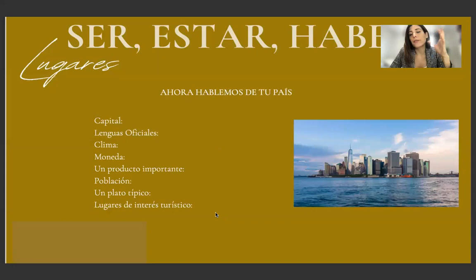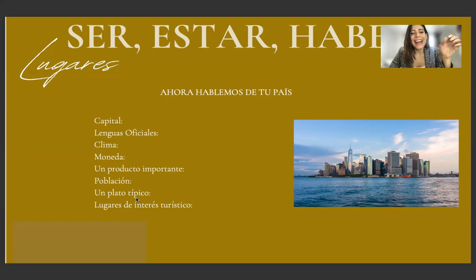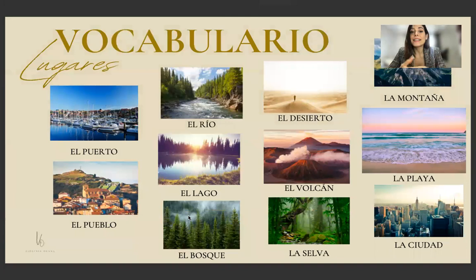For example, if it was for me I would say: capital — Buenos Aires; lenguas oficiales — el español; clima — frío, calor, templado, todos los climas; moneda — el peso; un producto importante — la carne; un plato típico — el asado; lugares de interés — cataratas de Iguazú, Patagonia, Buenos Aires, Mendoza, etcétera.